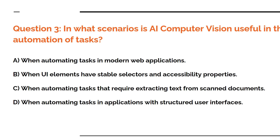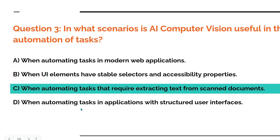Pause this video, type your comment. The answer is C — when automating tasks that require extracting text from scanned documents. Scanned documents are nothing but images, and image means computer vision.